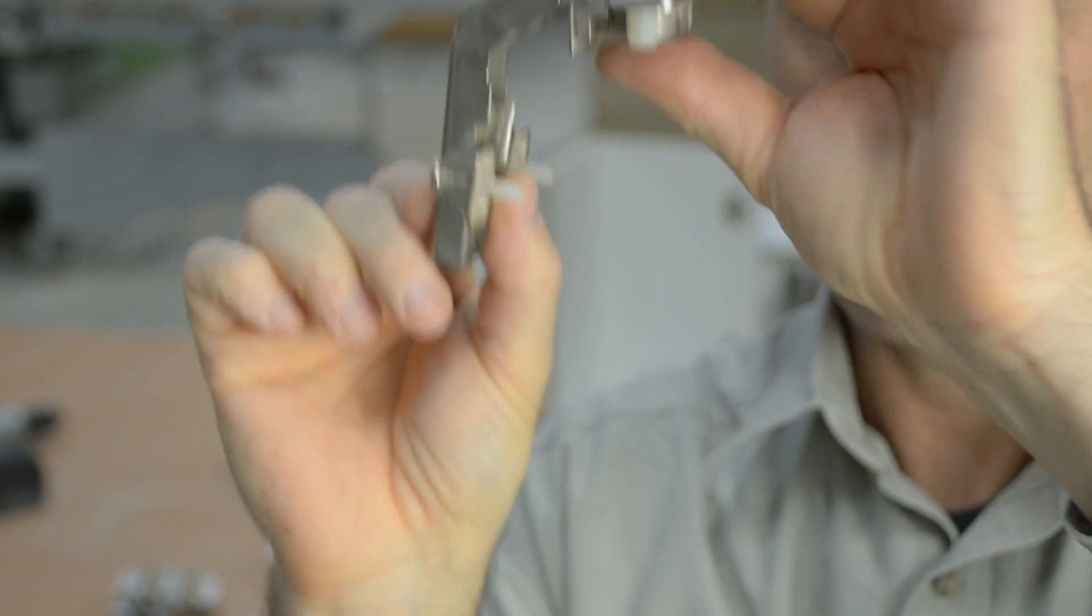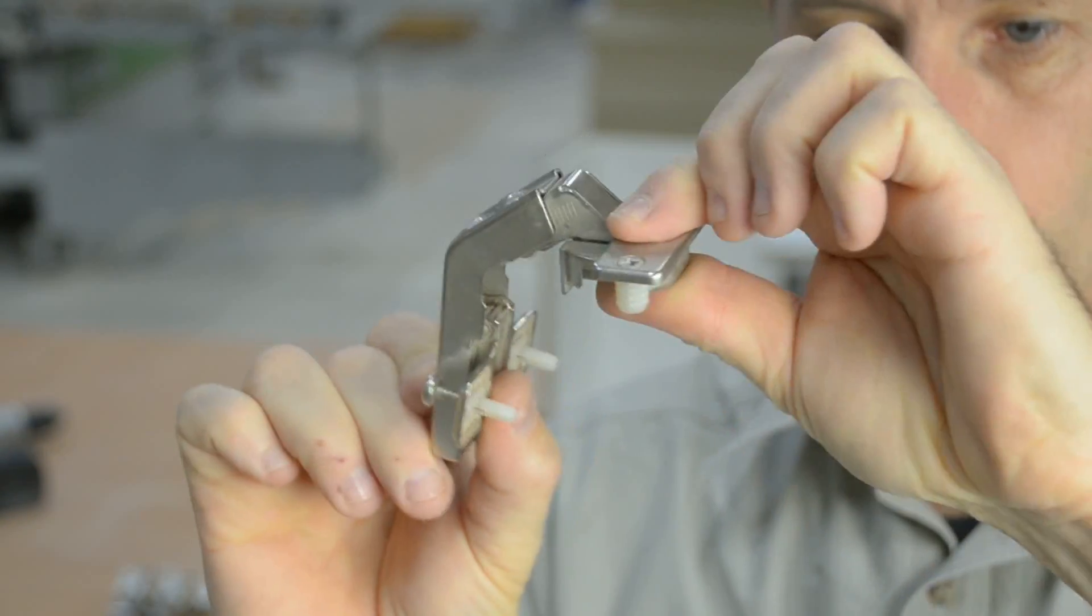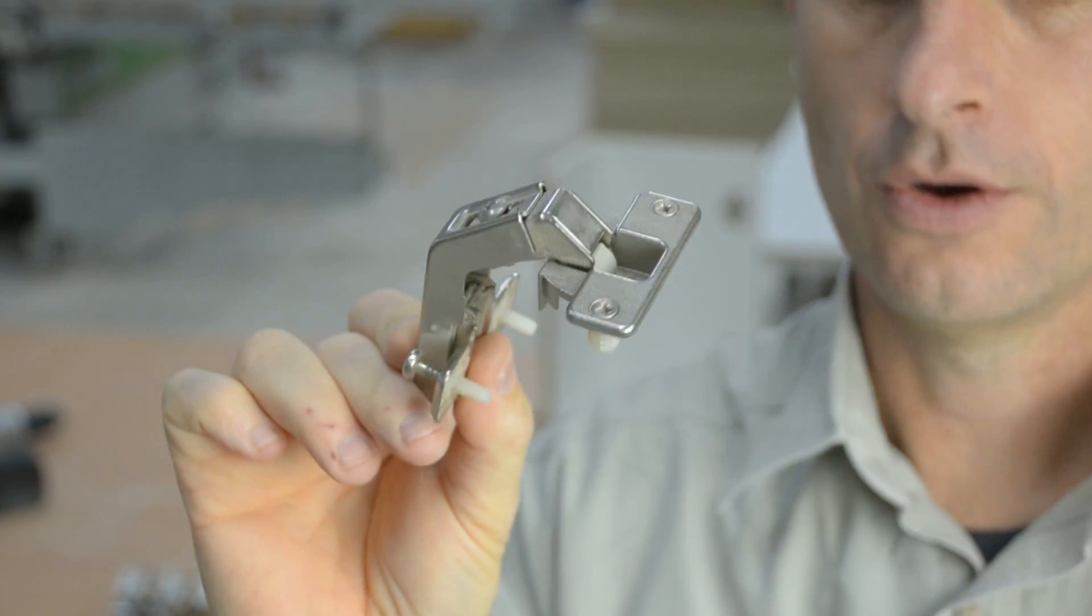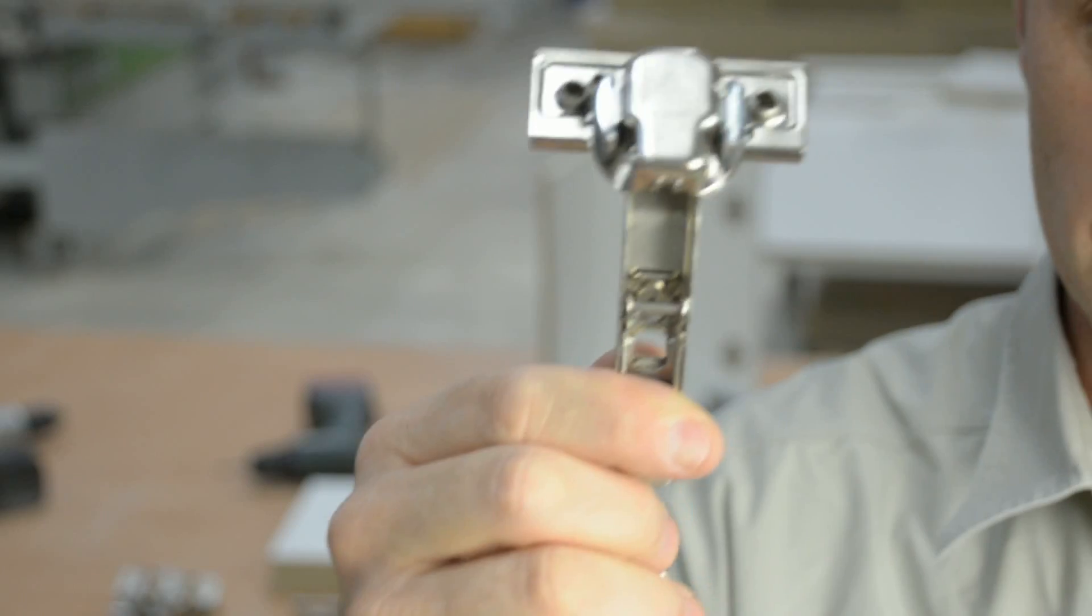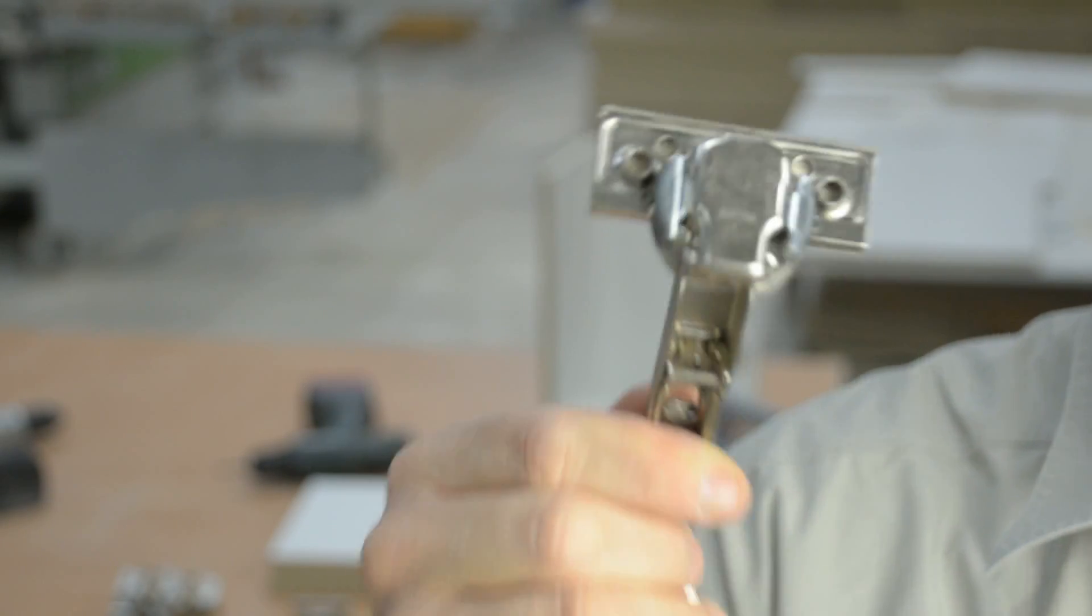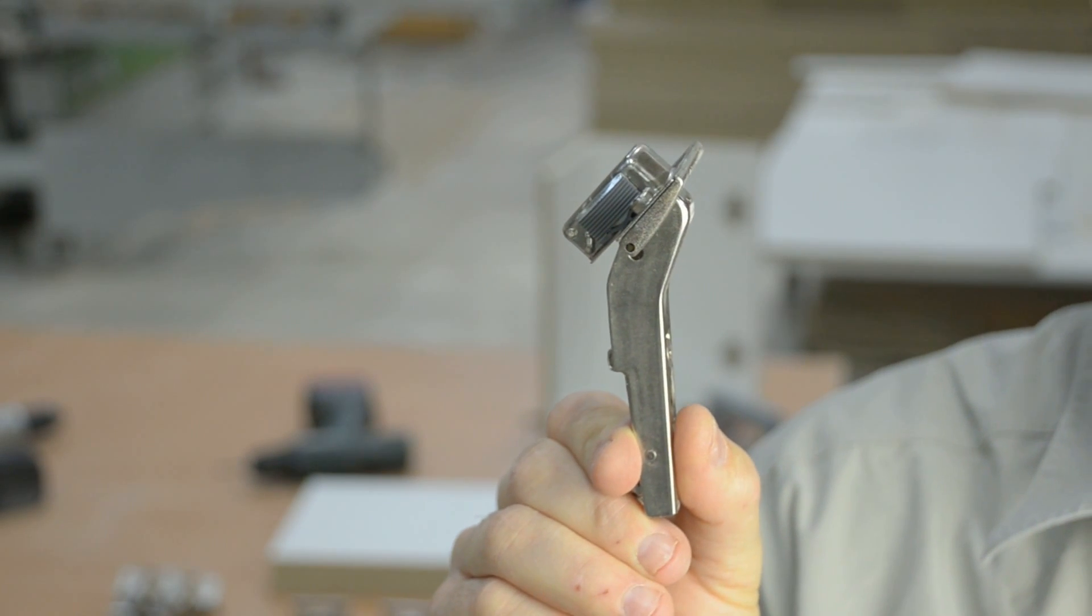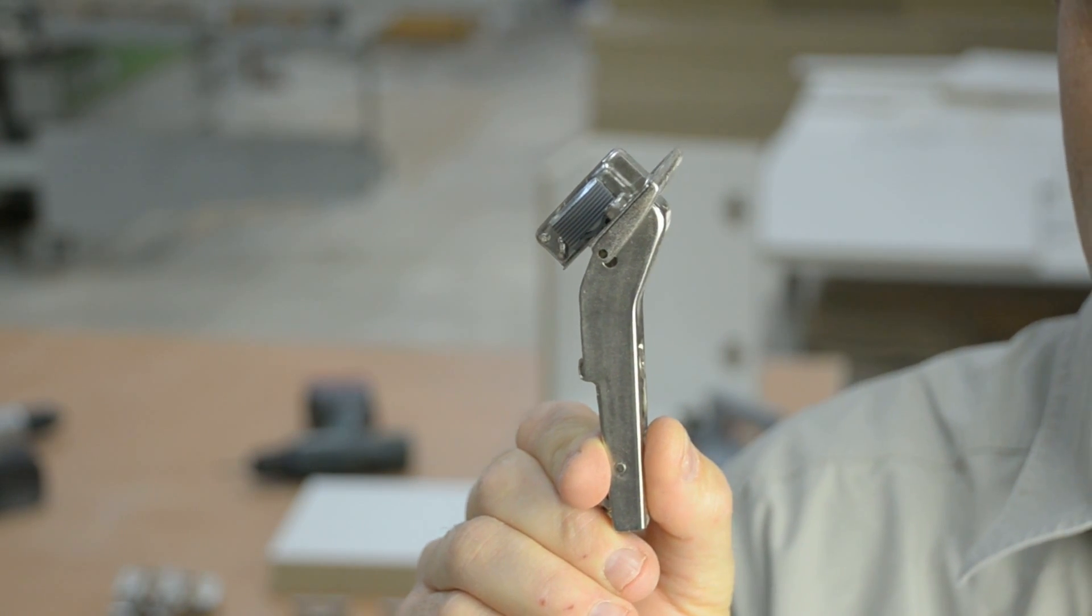Now this is a hinge that's designed to mount two doors together on a bifold door in a corner cabinet in the kitchen. This one is very similar, but it's designed to mount the door at a 45 degree angle from the side of the cabinet.